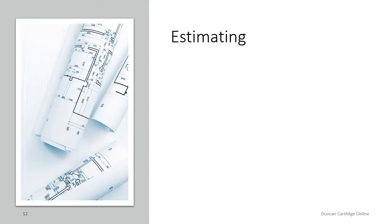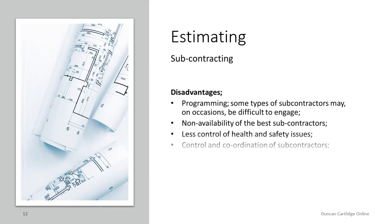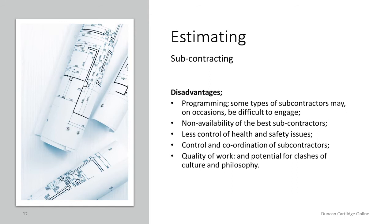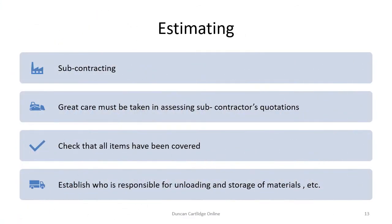There are, however, disadvantages. The main one being that good subcontractors may not be available when required, as well as potential problems with coordination and health and safety issues. As a main contractor, great care must be exercised when carrying out due diligence on subcontractors' quotations, being careful to ensure that the subcontractor has fully complied with the obligations to the main contractor. This aspect will be discussed in another tutorial.